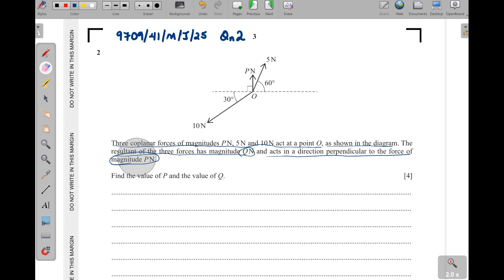If the resultant of the forces acts in the direction that is perpendicular to the force of magnitude P, where is P? P is here, so the resultant of the forces has to either act here because that would be the perpendicular, or here. So that means that the resultant of the forces in Y, in the vertical axis, is zero.